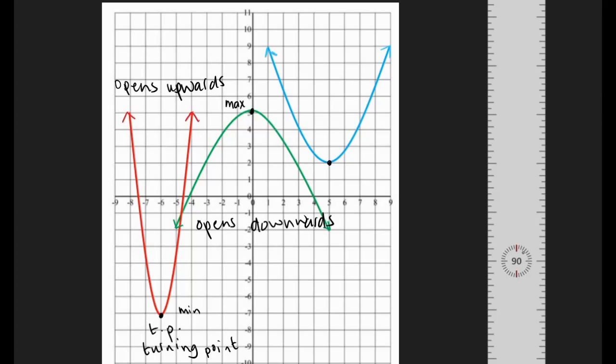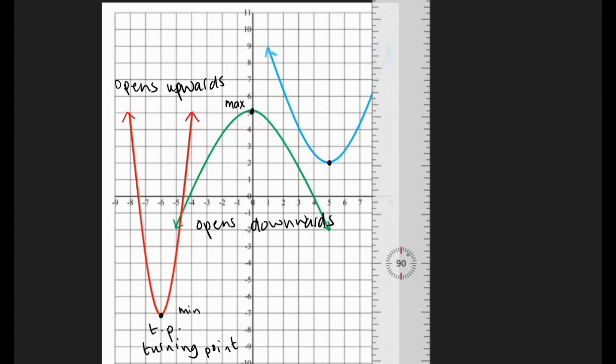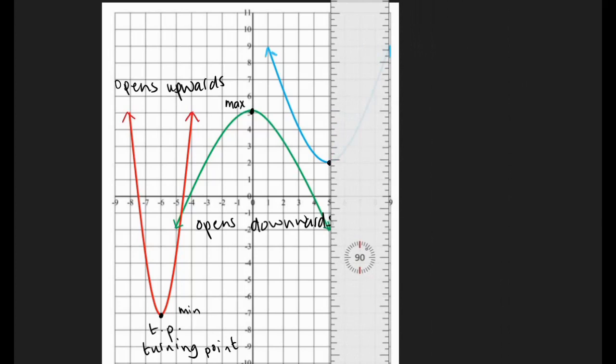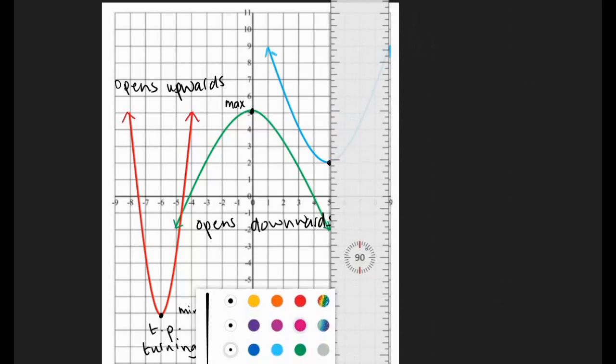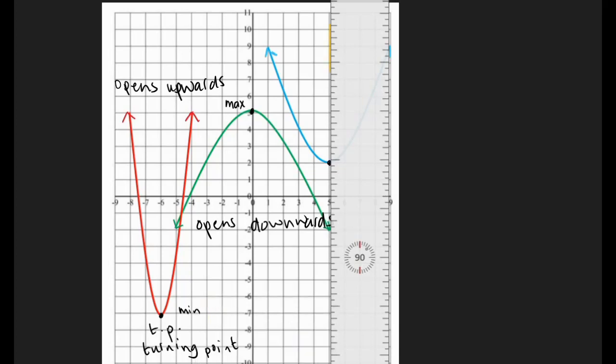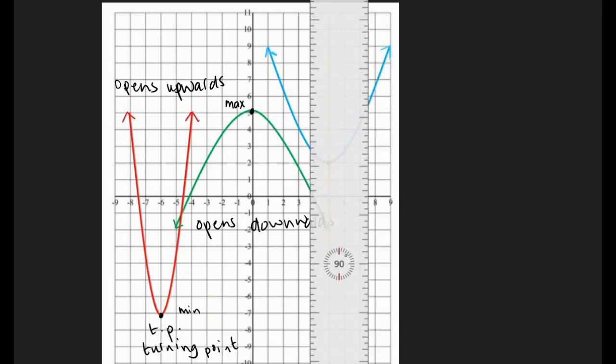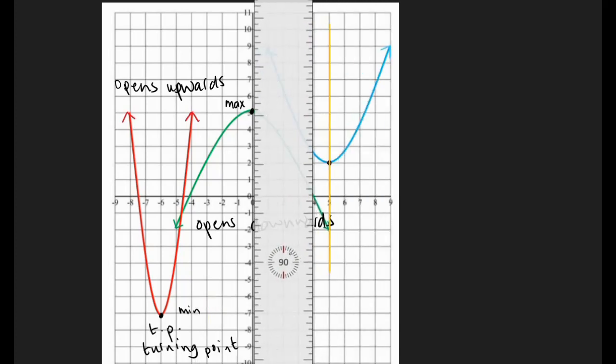Now, if we draw a line here on the vertex, I'm going to make it a nice, let's say, yellow. We draw a line straight through the vertex.